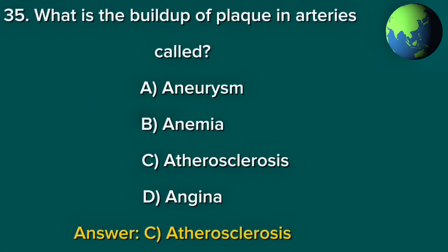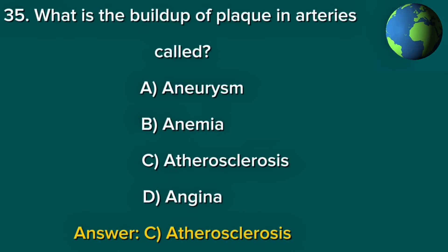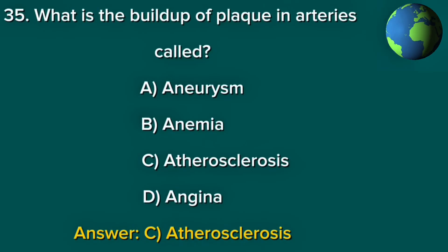Question 35. What is the build-up of plaque in arteries called? A. Aneurysm. B. Anemia. C. Atherosclerosis. D. Angina. Answer: C. Atherosclerosis.